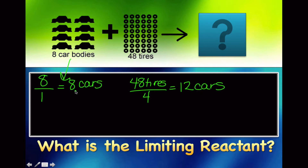The smallest number is always the winner here, because that is the smallest number of reactants available and it determines how much product I can make. Because I only have enough car bodies to make 8 cars, that is the maximum amount I can make.